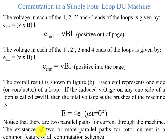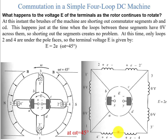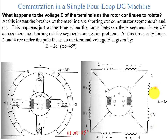There are two parallel paths for current through the machine. The existence of two or more parallel paths for rotor current is a common feature of all commutation schemes. If the rotor is rotated a further 45 degrees, loops 1, 1-prime, 3, and 3-prime are no longer under any poles, so the voltage induced in them is zero. Only loops 2, 2-prime, 4, and 4-prime contribute, so the total voltage reduces to E = 2E.